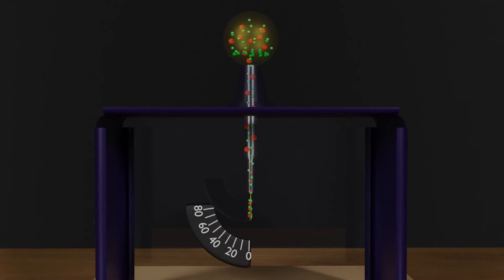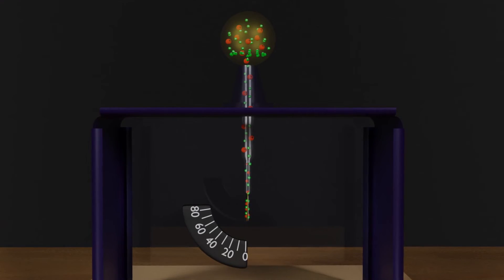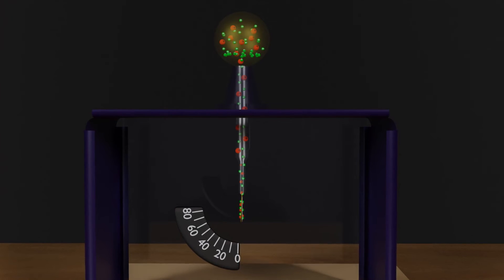For this purpose, a graduated scale is provided on the electroscope. And this is how an electroscope detects charges.